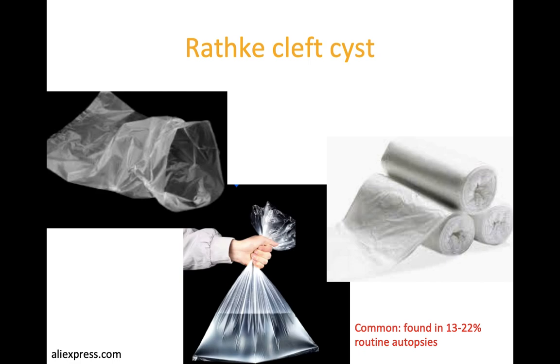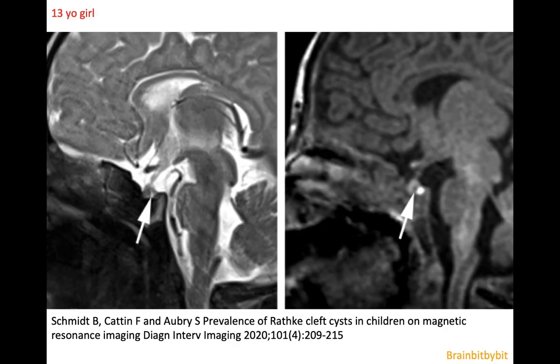Rathke's cleft cysts occur in the sellar and suprasellar region. They typically range in size between a few millimeters to a little bit more than a centimeter, but they can be even larger.